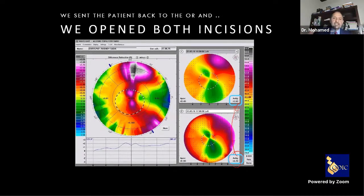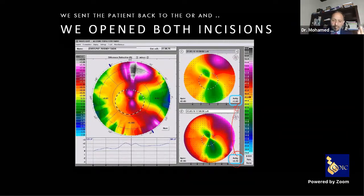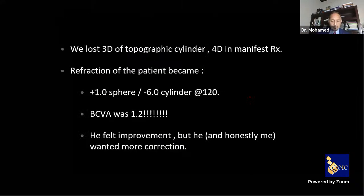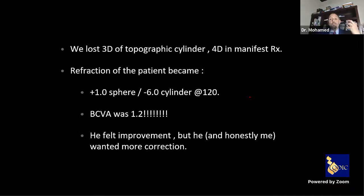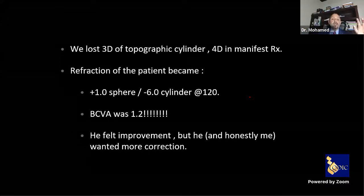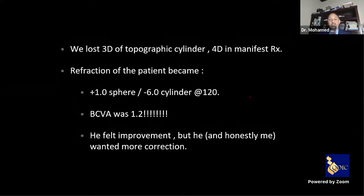The first message: you can treat post-PKP astigmatism with femto arcuate incisions, but I prefer to open to the surface for maximum effect. We lost 3 diopters of topographic astigmatism — which was clinically very significant because now the best corrected visual acuity jumped from 0.7 to 1.2. The patient felt improvement, but both he and I wanted more correction.